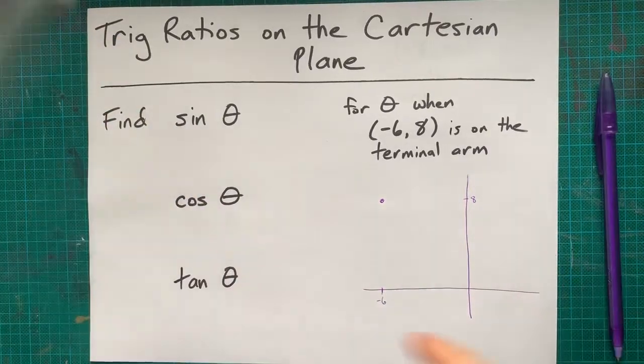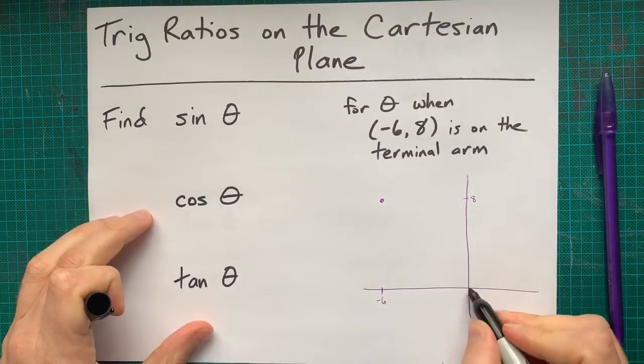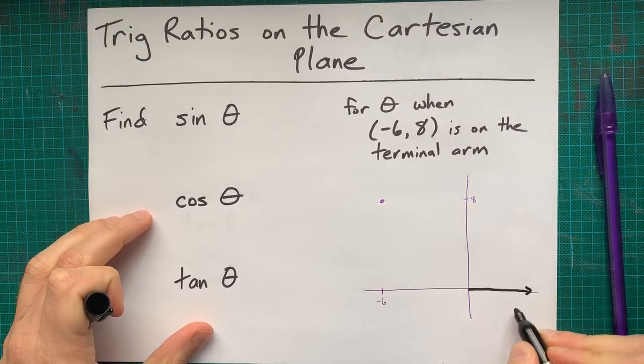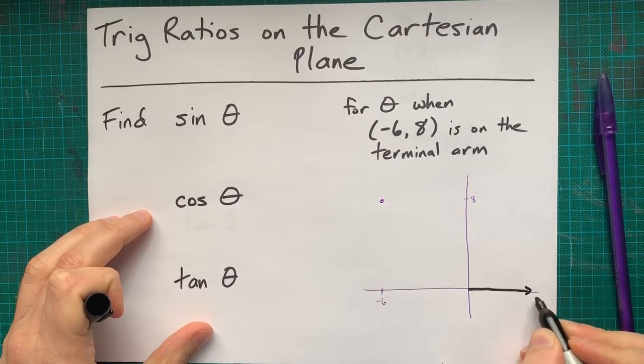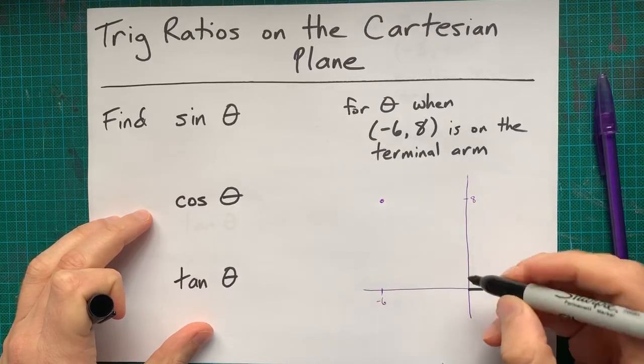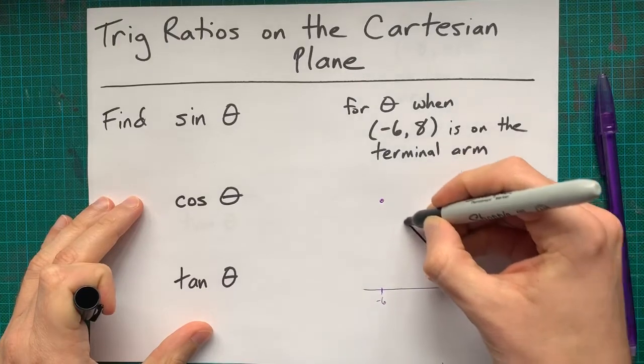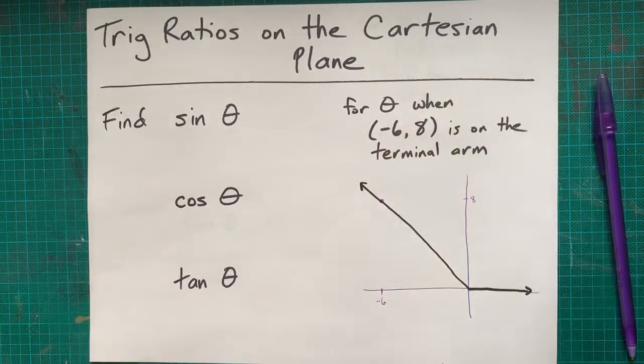What's actually happening here is you're being told that the angle theta, which starts here at 0 degrees in standard position, goes through that point, and it can go on to infinity.